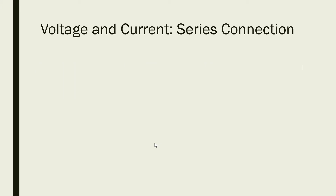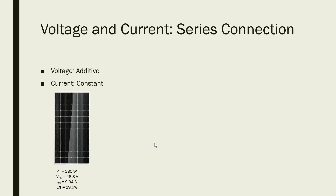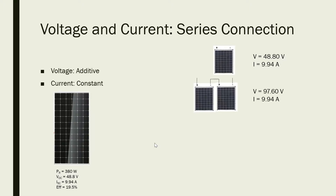Voltage and current in a series connection. As we have mentioned, in a series connection the voltage is additive while the current is constant. Suppose we have a solar panel with an open circuit voltage of 48.8 volts and a short circuit current of 9.94 amperes, and we have two of these solar panels connected in series.